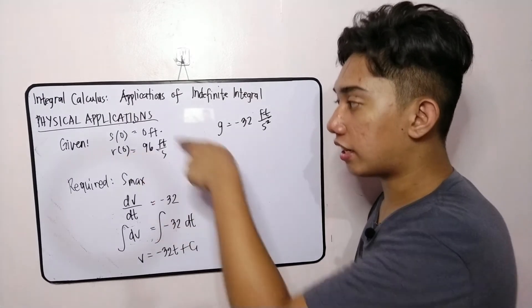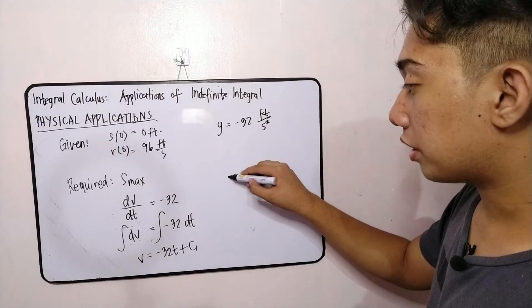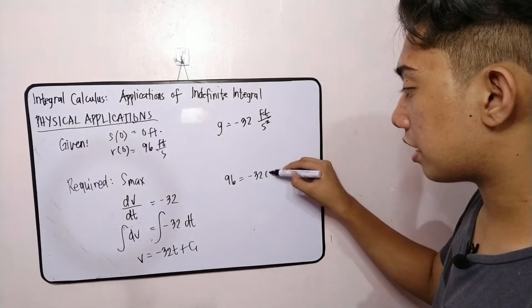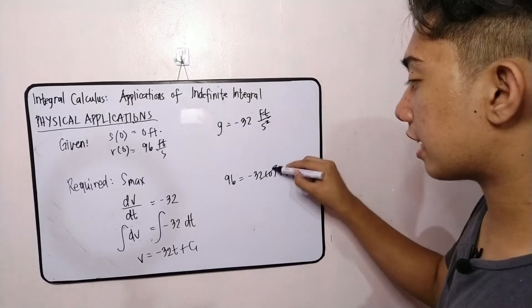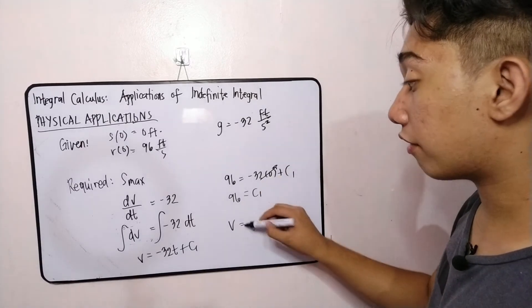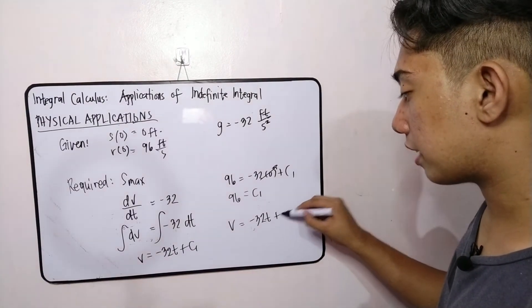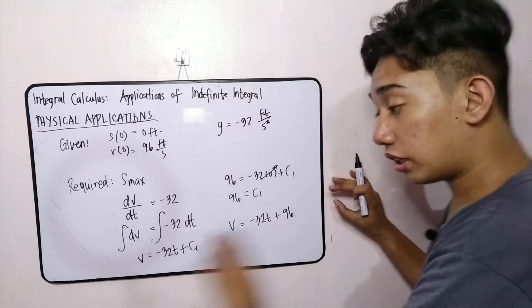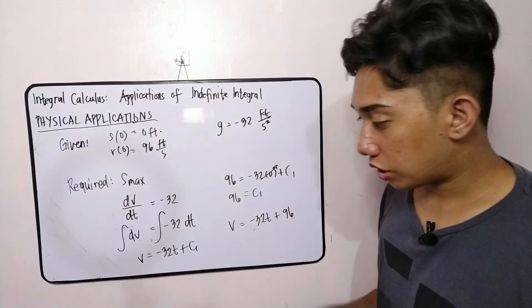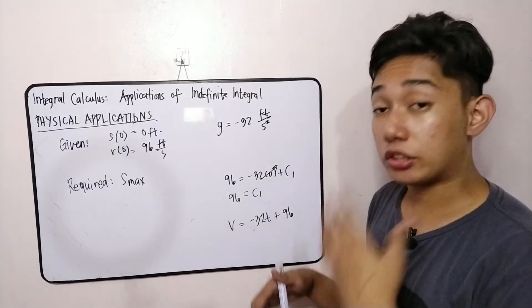There's an initial case here that v of 0 is 96 feet per second. Therefore, we substitute value. So 96 is equal to negative 32 times 0 plus c sub 1. This cancels. So therefore, 96 is our first constant. Completing the velocity function as v is equal to negative 32t plus 96. We will put it later muna yan dyan, so that we will use this equation to find the value later.